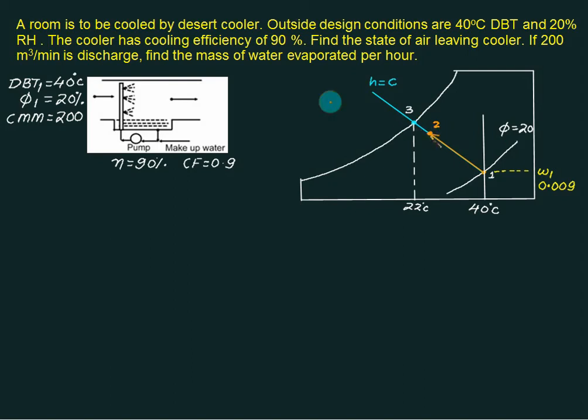At point number 2 we want to find out the dry bulb temperature. That will be the exit condition. So contact factor is T1 minus T2 divided by T1 minus T3. T1 minus T2 and T1 minus T3.